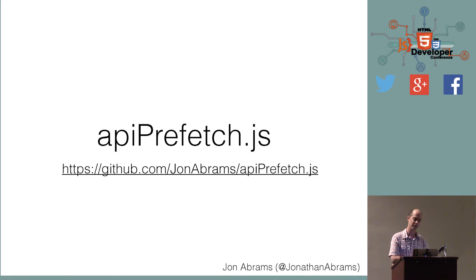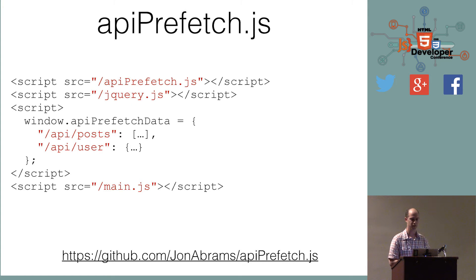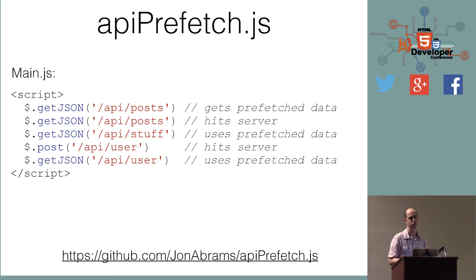To make it easier to implement on the front end so you don't have to worry about checking that global variable, wiping it out so you don't hit it twice in the same session, I created a little library called API Prefetch. You add an extra line at the top to include the library, and then when you make a request it will automatically check the prefetch data or hit the internet depending on what's needed. The way it does that is by monkey patching XMLHttpRequest. The nice thing about doing it this way is that it just works for whatever library you're using — whether it's jQuery, Angular, Ember, or React — without any custom behavior.